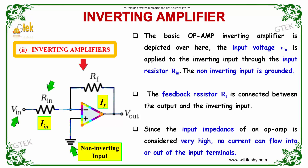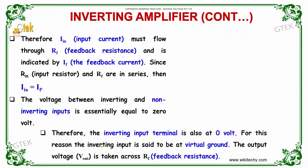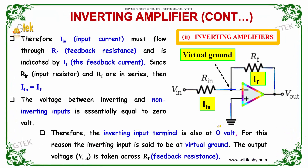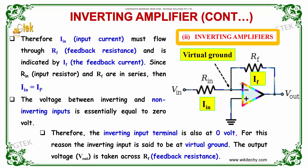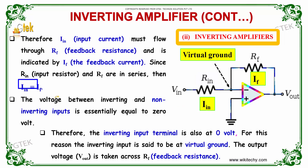Since the input impedance of an operational amplifier is considered very high, no current can flow into or out of the input terminals. Therefore, the input current I_in must flow through R_F, the feedback resistance, indicated as I_F, the feedback current. Since R_N and R_F are in series, we can say that I_in is equal to I_F.